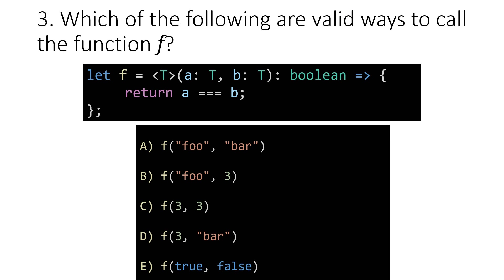In the previous lecture we looked at a way of defining generic functions. Here we have a generically defined function f, and your task in this question is to identify which of the following ways are valid calls to the function f.